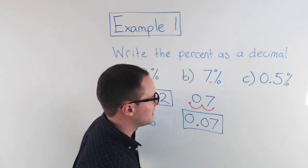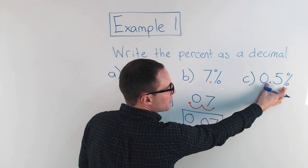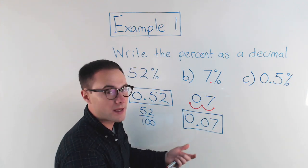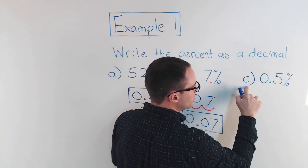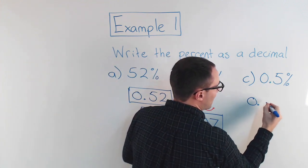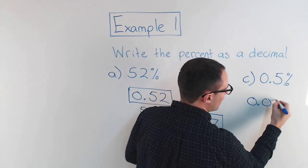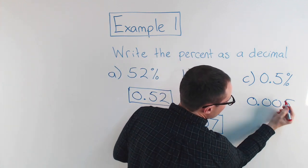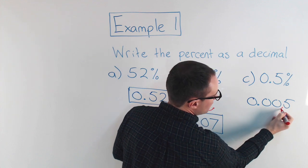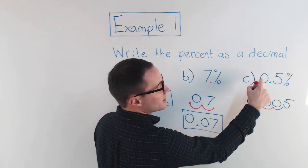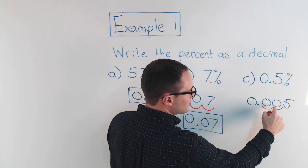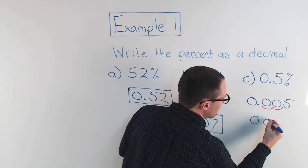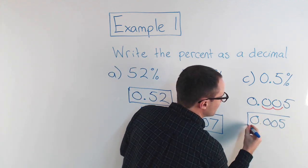For part c, 0.5% — same thing, just move the decimal point twice to the left. The decimal point was here; I move it once, twice, and I need to add a zero as a placeholder. So 0.5% becomes 0.005 as a decimal.